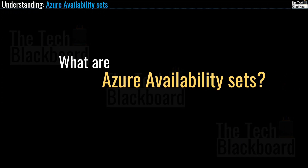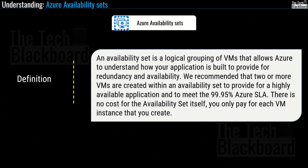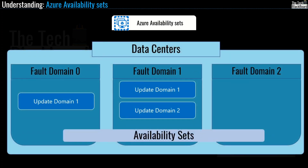This brings us to another important Azure concept: Azure Availability Sets. As per Microsoft, an availability set is a logical grouping of virtual machines that allows Azure to understand how your application is built to provide for redundancy and availability. Microsoft recommends that two or more virtual machines be created within an availability set to provide a highly available application and to meet the 99.95% Azure SLA. There is no cost for the availability set itself — you only pay for each virtual machine instance you create. When adding virtual machines to an availability set, Azure automatically assigns each VM an update domain and a fault domain.